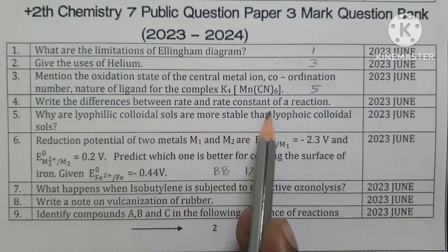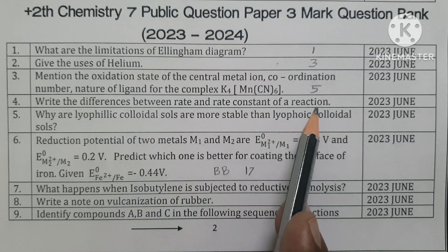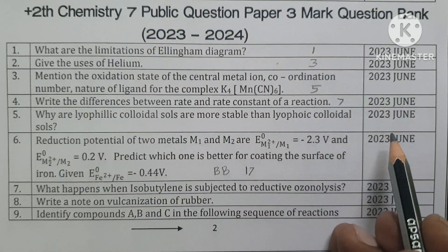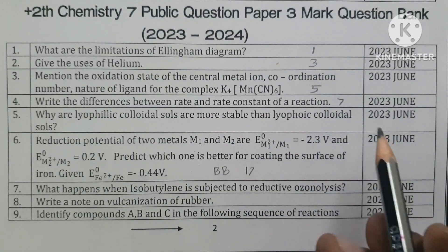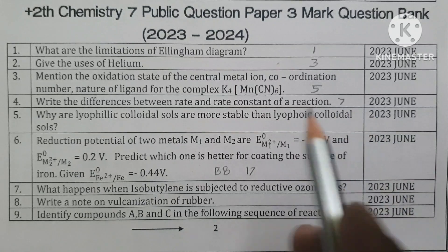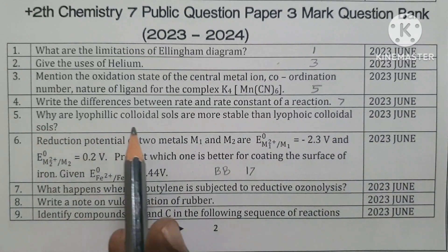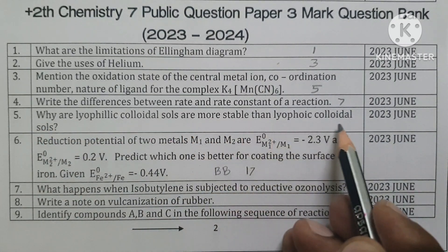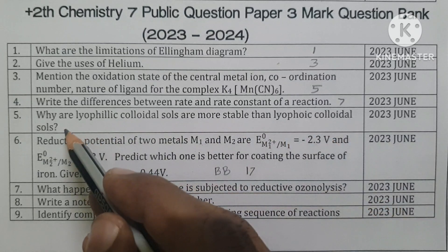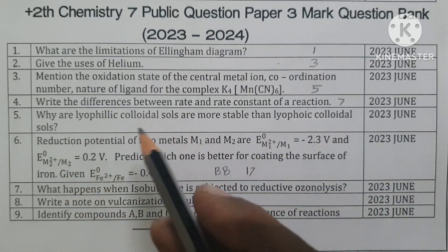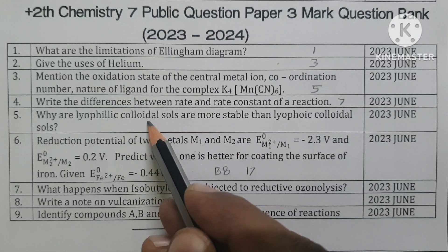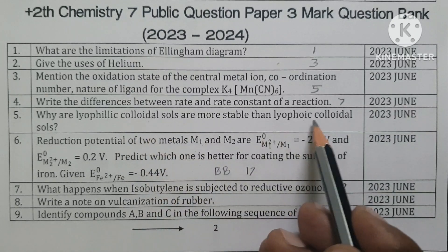Unit number five: write the differences between rate and rate constant. Seventh unit — lyophilic colloids and lyophobic colloids. Lyophilic colloids are more stable than lyophobic colloids because the dispersion phase has a strong attractive force with the dispersion medium.